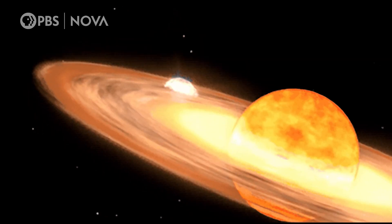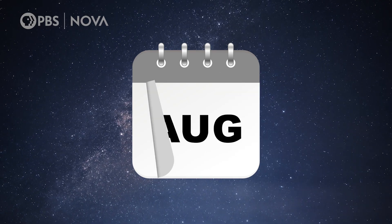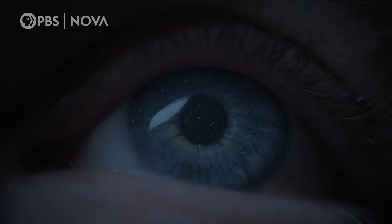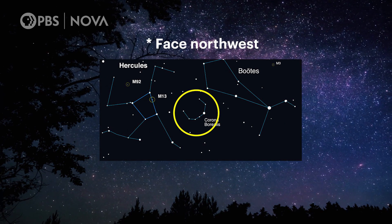Get ready to see a star explode! Sometime between now and September, a bright light will appear in the sky and only be visible to the naked eye for a few days near the Hercules and Boeotus constellations.